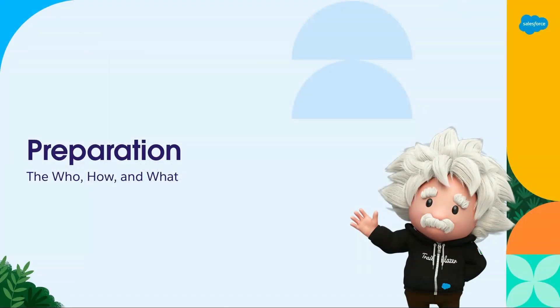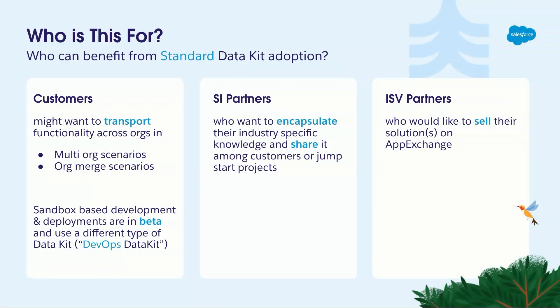The first question is the who, how, and what. Who is this for? Basically for everyone who wants to transport data cloud assets from one org to another, but not for people who want to use sandboxes, because for sandboxes there's now a beta called DevOps Data Kits. Today we will be talking about standard data kits, available to customers, SI partners, and ISV partners. Customers might use them for org migrations or multi-orgs, SI partners to ramp-start projects, and ISV partners might want to earn money via AppExchange.